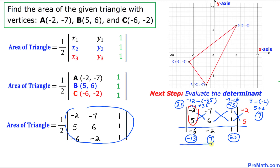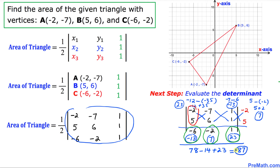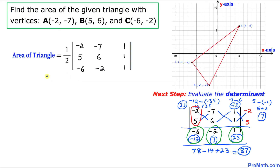Now let's multiply these individual numbers and add them up. That gives us: negative 6 times negative 13 is 78, minus 14, plus 23, which equals 87. So the value of this determinant turns out to be 87.